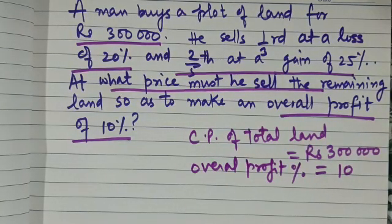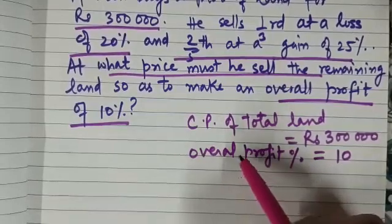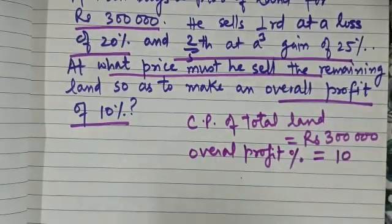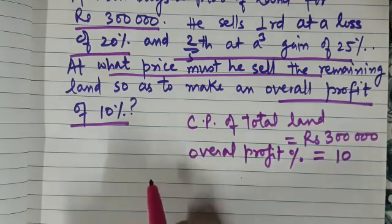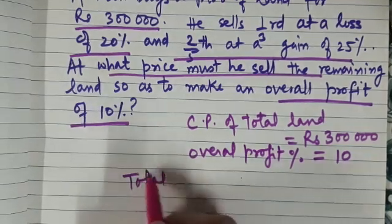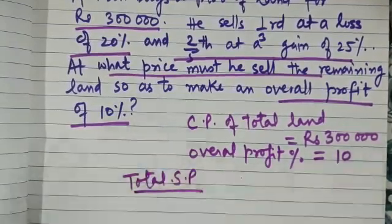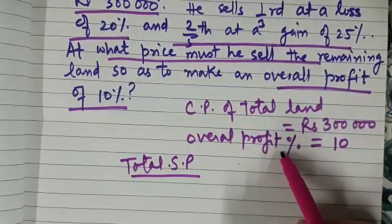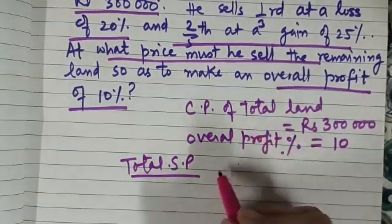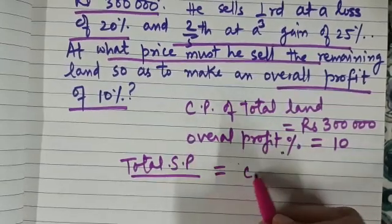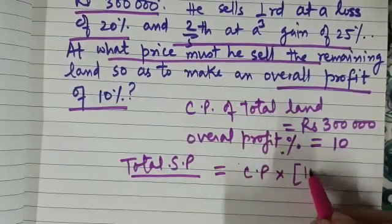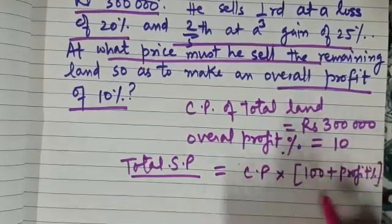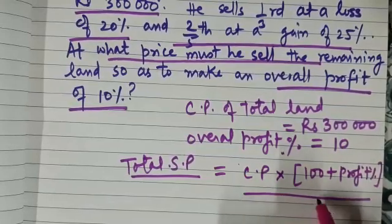Now, with the help of these two, that is CP of the total land and overall profit, can we calculate the total selling price? Which formula we will be using? Total selling price when gain percent or profit percent and CP is given. Yes, it is CP into 100 plus profit percent divided by 100.